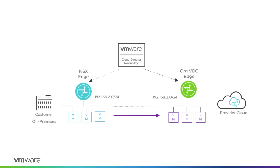Hello, this video will show you how to stretch an on-premises network to a VMware Cloud Director cloud-backed by NSX Data Center for vSphere. One of the common cases when tenants need to stretch an on-premises network across the cloud site is during on-premises to cloud migrations. This allows network connectivity between the already-migrated and not-yet-migrated virtual machines as if they are in the same network segment.